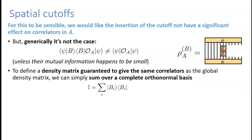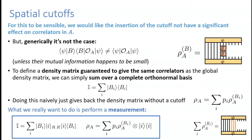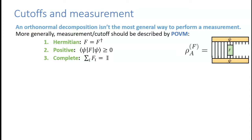To define a density matrix guaranteed to give the same correlators as the global density matrix, one wants to sum over a complete set of projectors — but if done naively, inserting a complete set just removes the cutoff and returns the global density matrix. So what we really want is not just a complete set of states but to perform a measurement: entangle the complete set of states with an apparatus, make a measurement, and get a density matrix decomposed into block-diagonal form where each block corresponds to a particular measurement outcome.